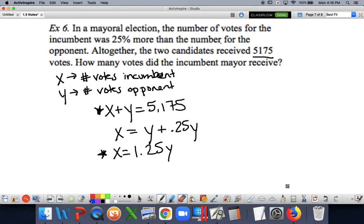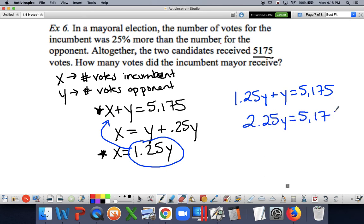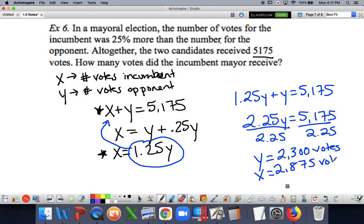So in order to solve, I'm going to take this and plug it in wherever I see an x. So I get 1.25y plus y equals 5,175. I add these together, I get 2.25y equals 5,175, divide by 2.25, pick up your calculator, have it help you out, and you get that our opponent received 2,300 votes. I then subtract that from 5,175 and I see that our incumbent received 2,875 votes. As we go through the rest of this unit, there will be more word problem practice. So just know that it is in your future. Thanks for your time.